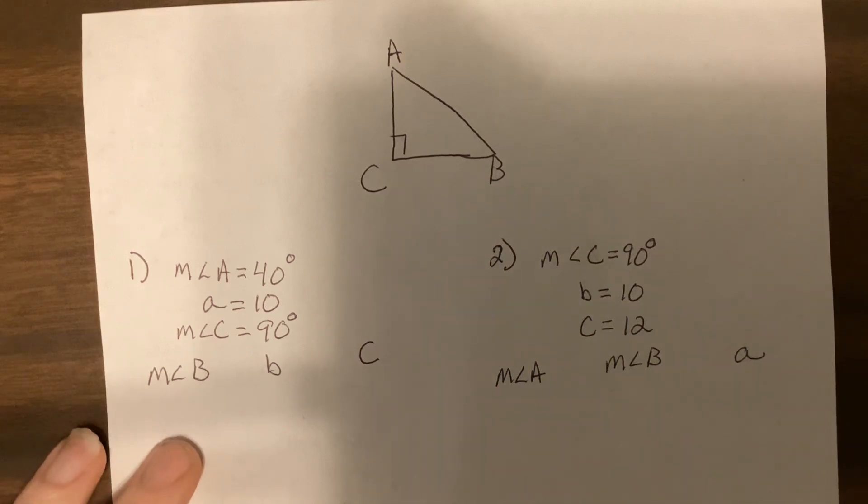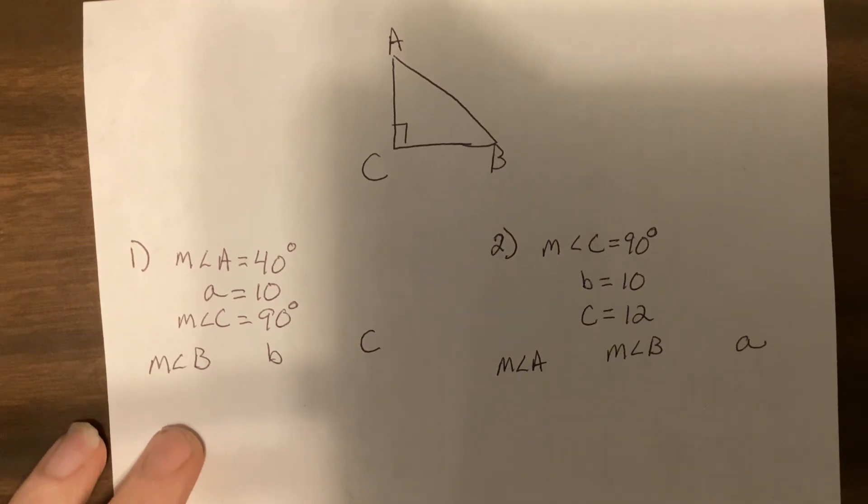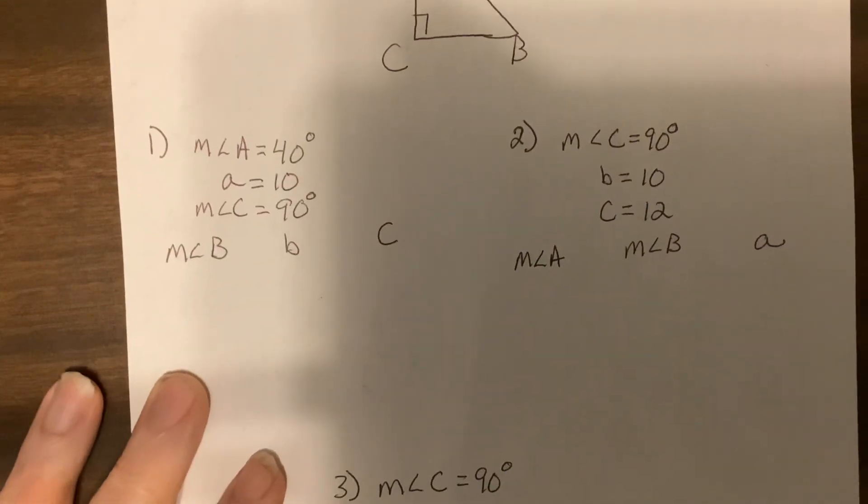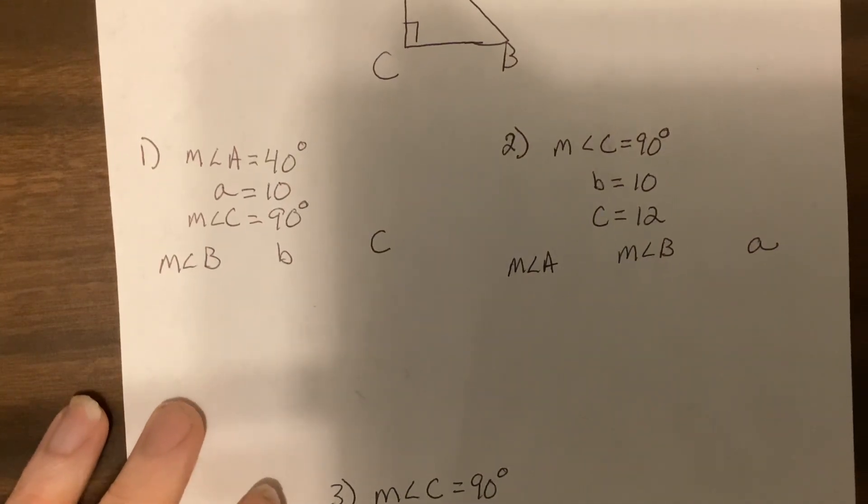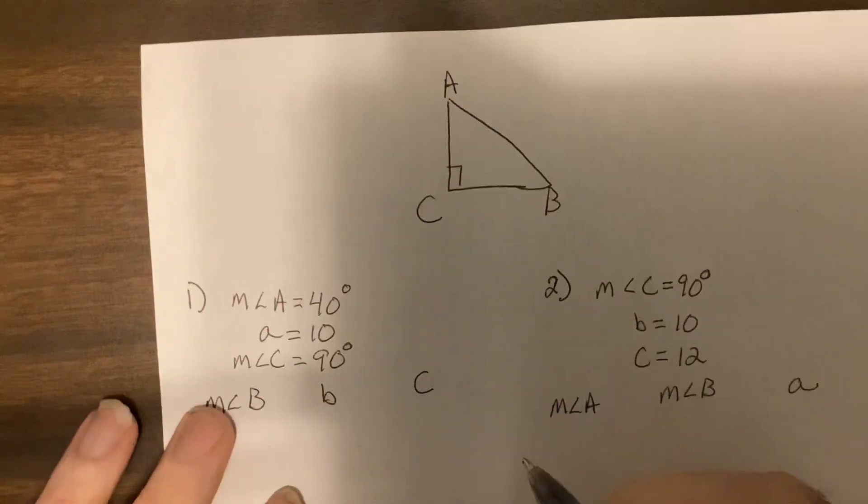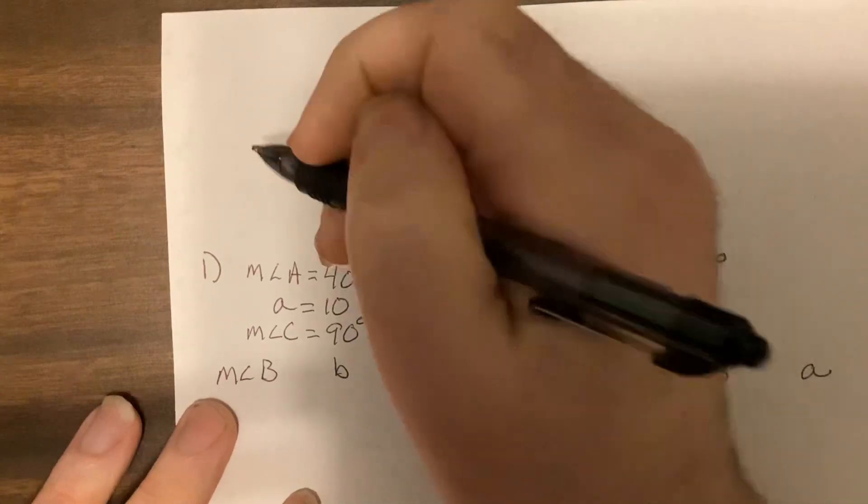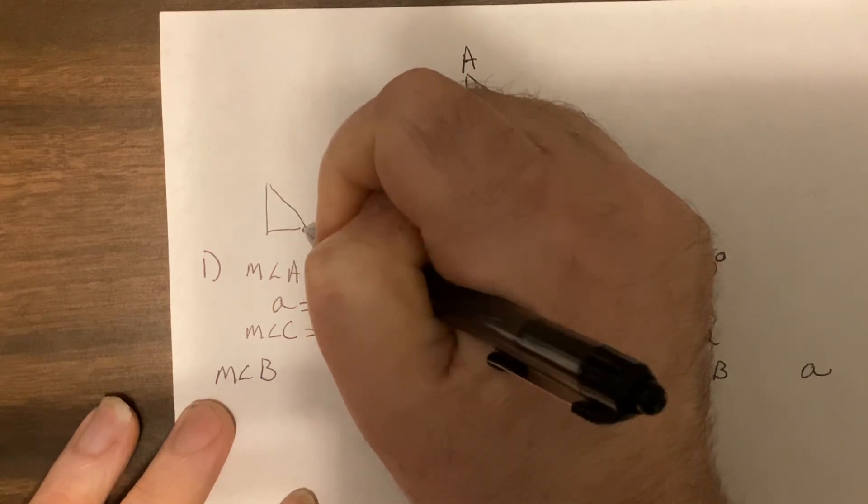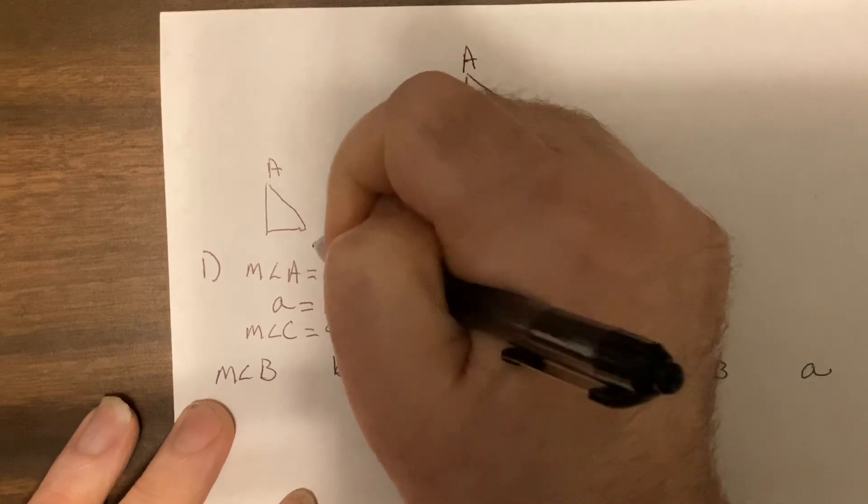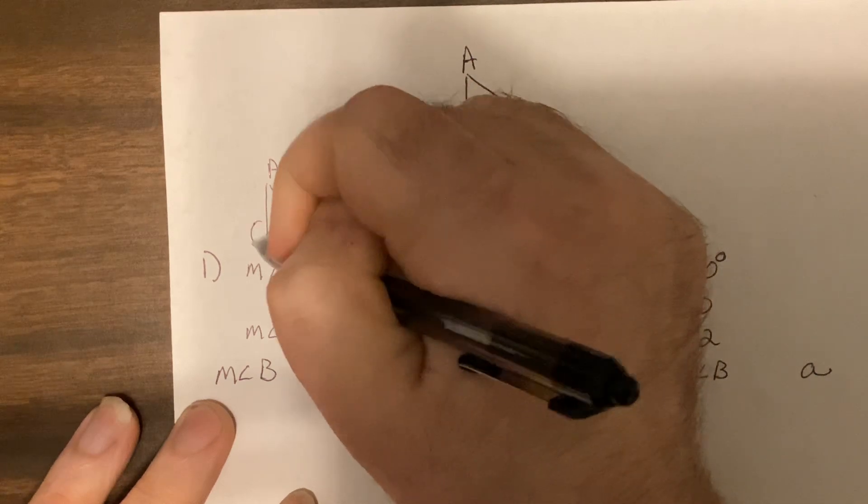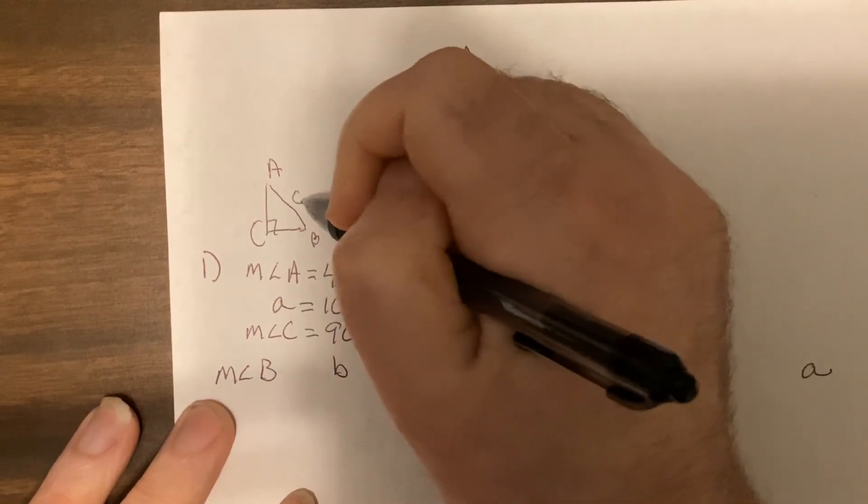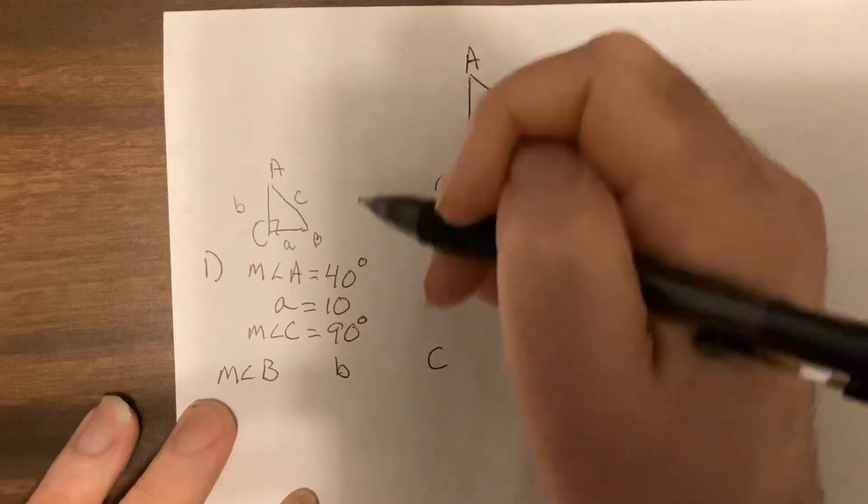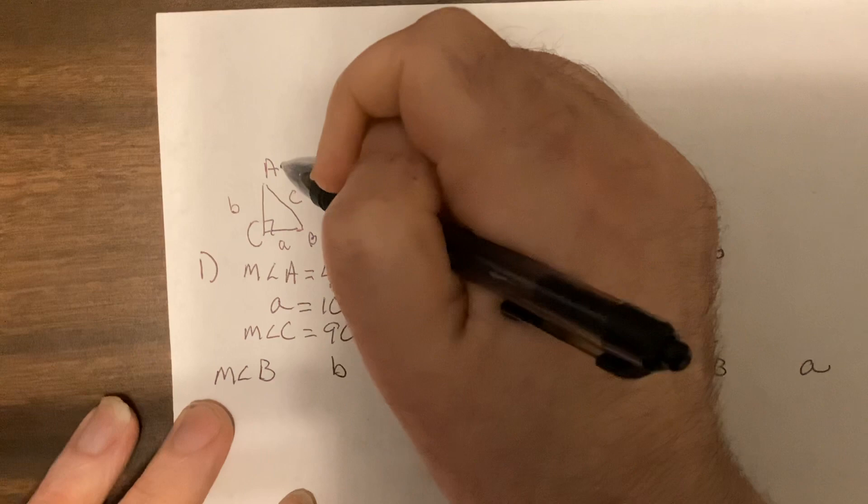I have three problems. One problem you can't see. Let's get to it. This first one, I actually like to make a little drawing. Don't have to, but I like to. B, C, and opposite the angle is the lowercase letter. We know this is 40 degrees.